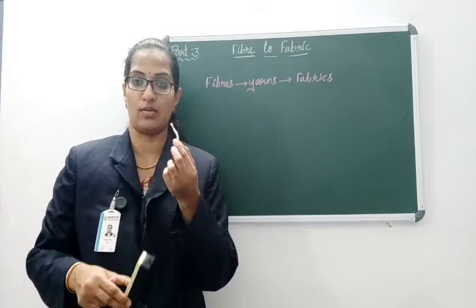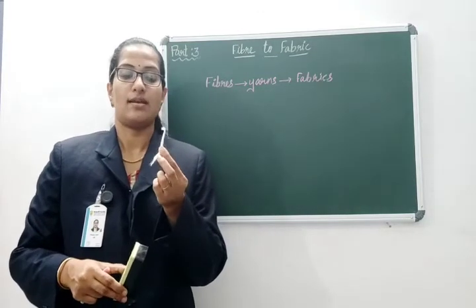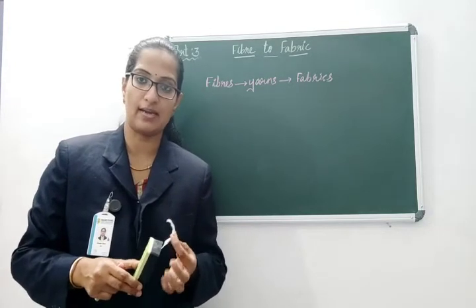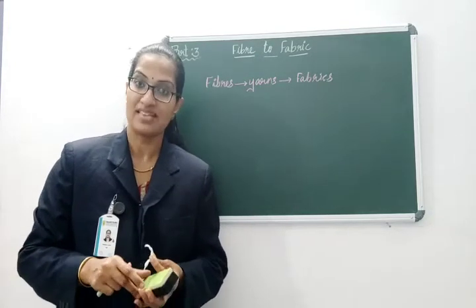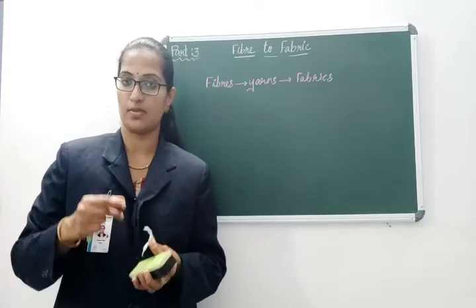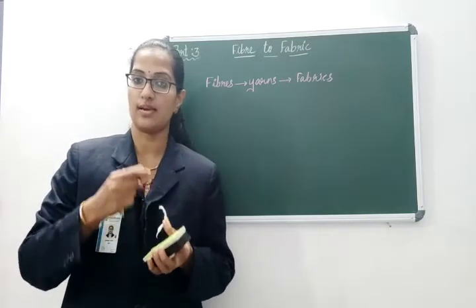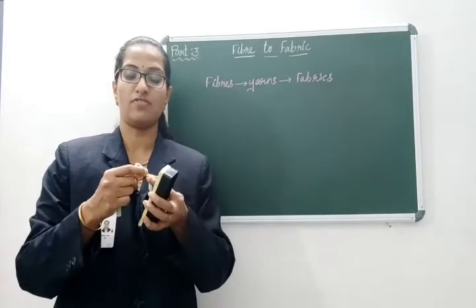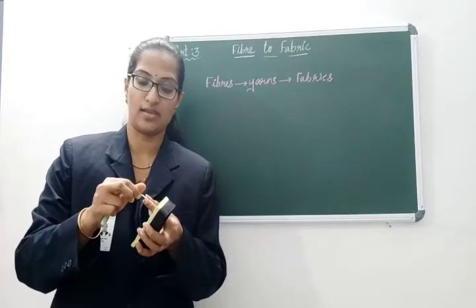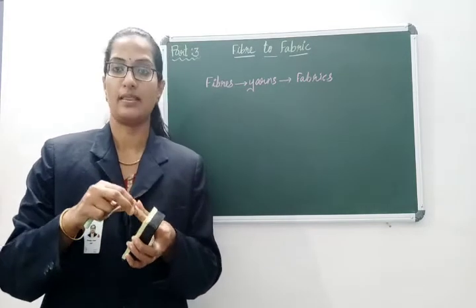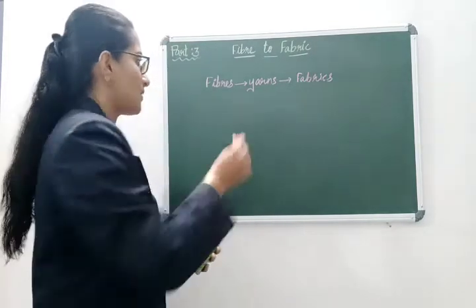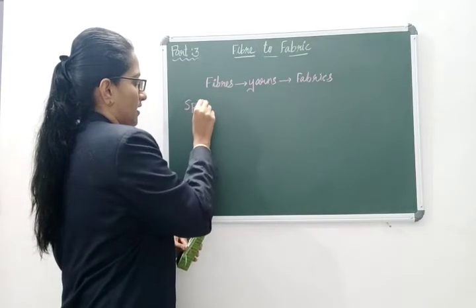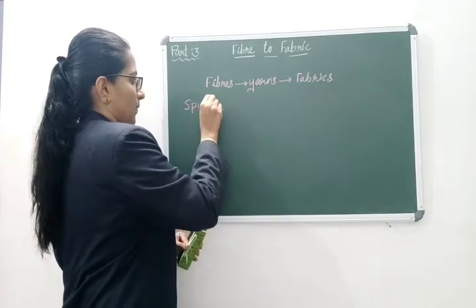So what we just did is called ginning. Ginning is the process of separating seeds from the cotton. Once the cotton is ready, that cotton is transported to the factory. From there the next process is spinning — after ginning, we move on to spinning.